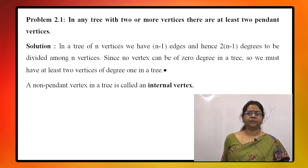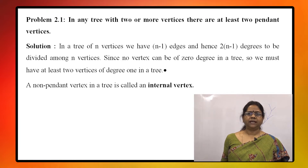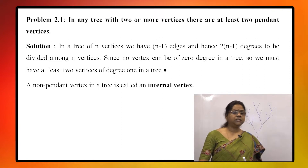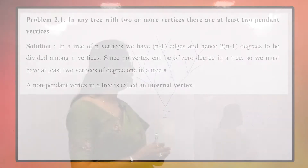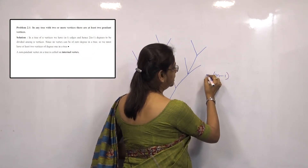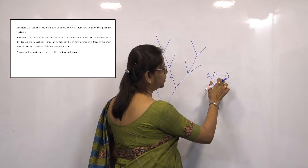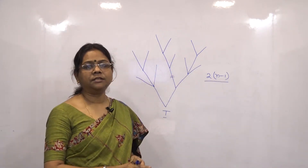Pendant vertices means a vertex with degree 1. Now, we know that in a tree with n vertices we have n-1 edges. Hence, each edge contributes 2 to the degrees, so n-1 edges contribute 2 each, giving a total degree sum of 2(n-1).